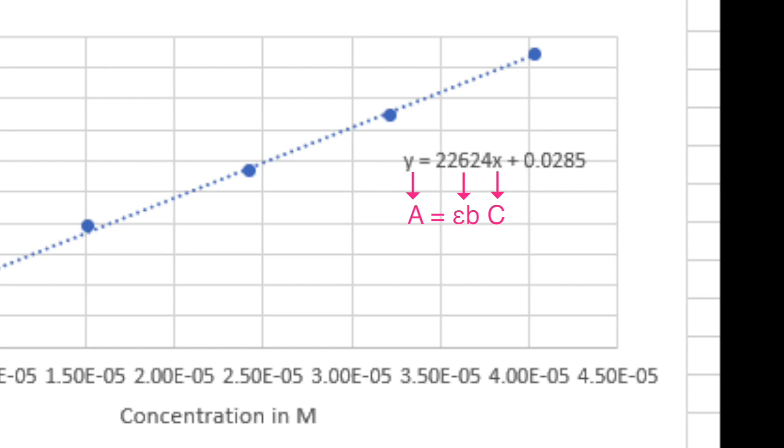The y-intercept b will theoretically be 0 since a sample with no dye will give 0 absorbance.